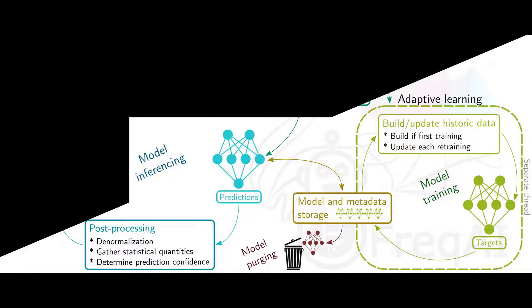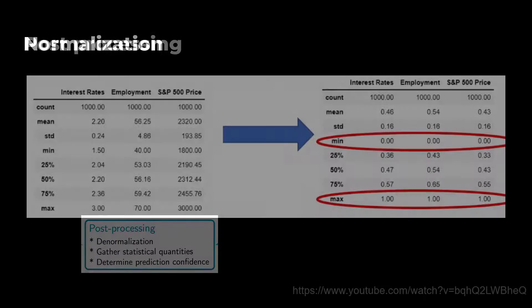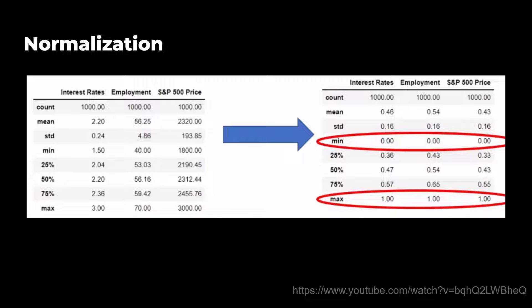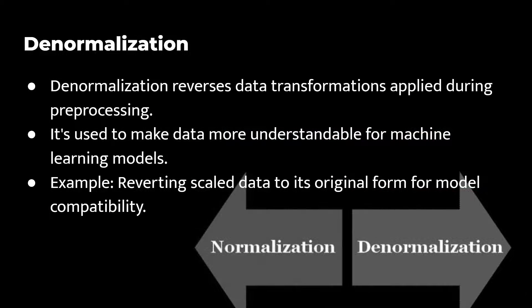After the model has made its predictions and purged its old models, there is also some post-processing before the whole cycle will be started again. Now these post-processing tasks are not really explained in the Frag AI documentation, but I can tell you a little bit about what happens here from a machine learning perspective. In an earlier step of the data pipeline, the data was normalized so that different features with different scales could be compared with each other. Denormalization is a process in the data preparation, where you take the data that has been previously normalized, and reverse that process to make it more suitable for analysis or reporting.